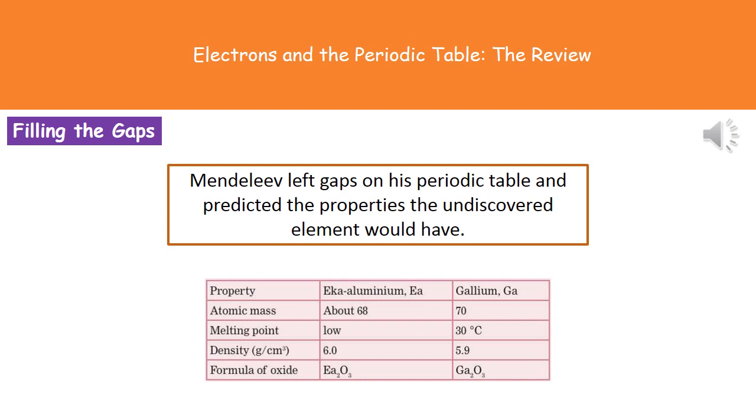And today if we have a look at gallium which is taking that place on his periodic table, then its atomic mass is 70. It's got a melting point of 30 degrees Celsius which is low. Its density is 5.9 grams per centimeter cubed. And the formula of its oxide is Ga2O3. So you can see just how close he was in terms of his predictions from his periodic table, even though these elements hadn't been discovered yet.